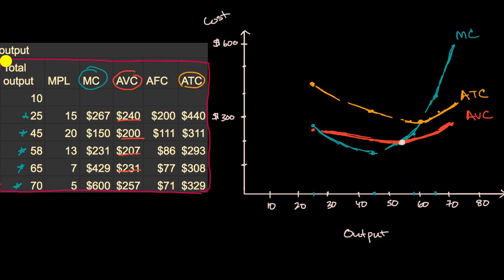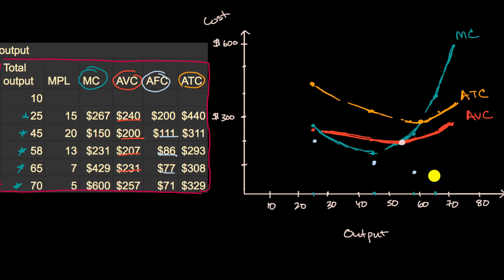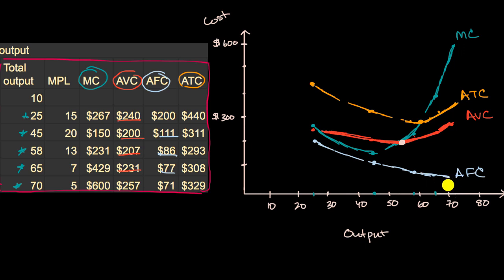The last thing to graph is average fixed cost, which is the most intuitive — it just asymptotes downward. At 25 units it's $200, at 45 units it's $111, at 58 units it's $86, at 65 units it's $77, and at 70 units it's $71. It gets lower and lower as you spread fixed costs over more output. The key takeaway is not just the rule of thumb about where marginal cost intersects AVC or ATC marking their minimum points, but understanding *why* that happens.